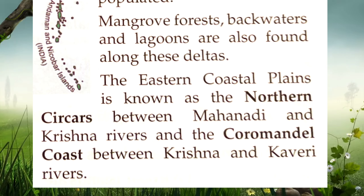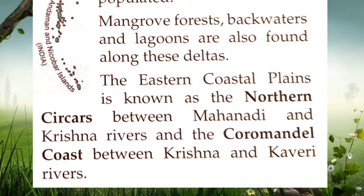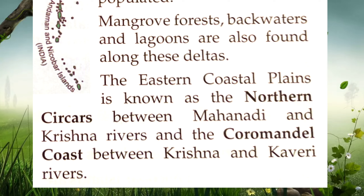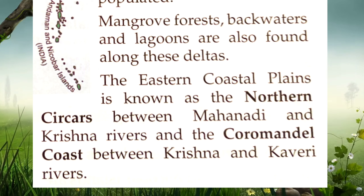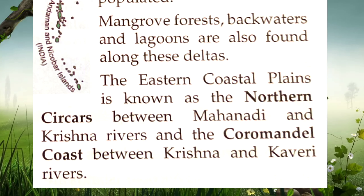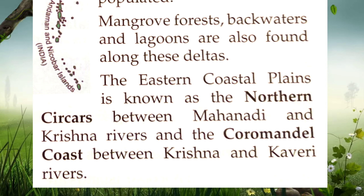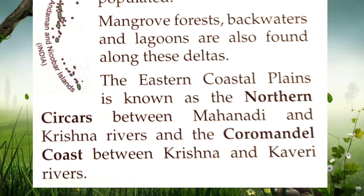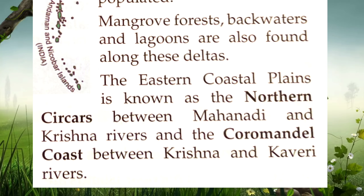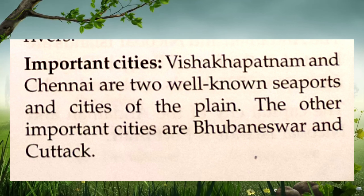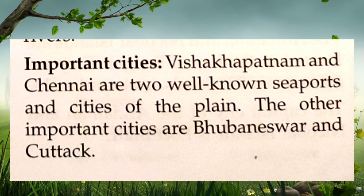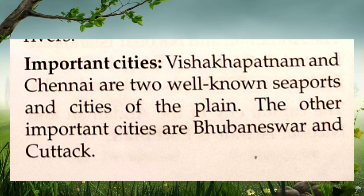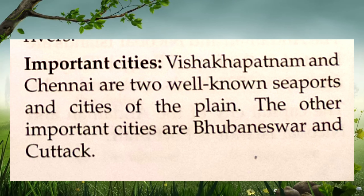The Eastern coastal plain is also known as the Northern Sarkars between Mahanadi and Krishna rivers, and the Coromandel Coast between Krishna and Kaveri rivers. Mangrove forests, backwaters and lagoons are also found along the deltas of the Eastern coastal plains. The important cities of this coastal plain are Visakhapatnam, Chennai, Bhubaneswar and Cuttack.